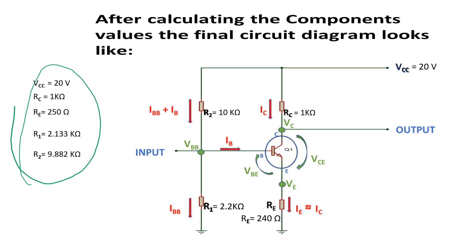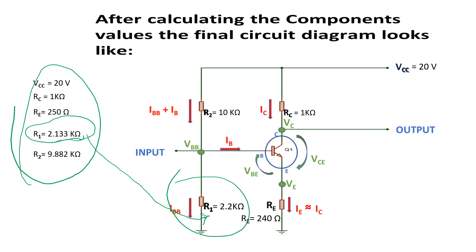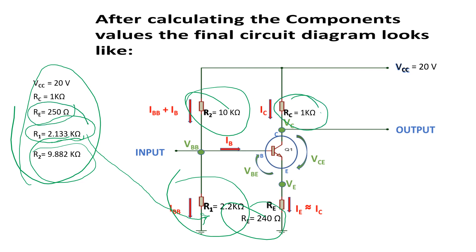I've put those values into this diagram. For R1 I put 2.2 kilohms — because a 2.133 kilohm resistor doesn't exist in practical life, but 2.2 kilohms does. Similarly, for R2 I used 10 kilohms, for RE I used 240 ohms instead of 250, and RC is 1 kilohm — all values you can find easily in practical life. VCC is the 20-volt power source.